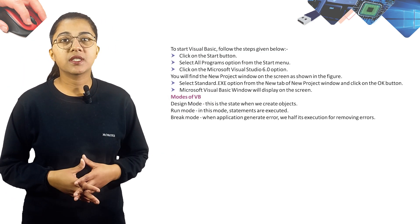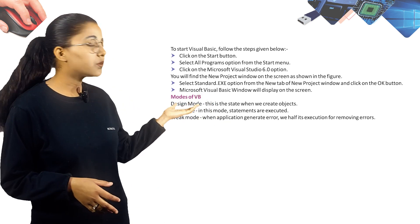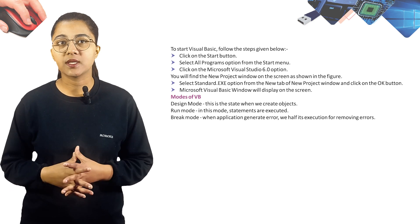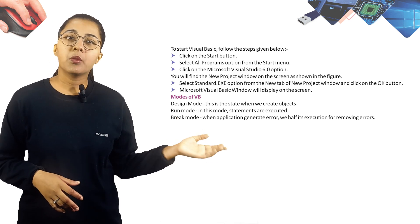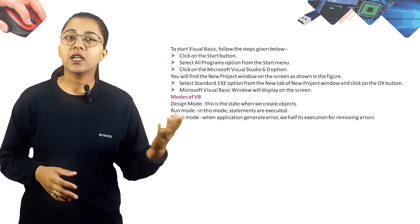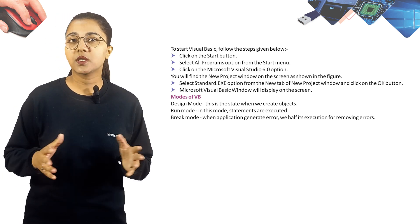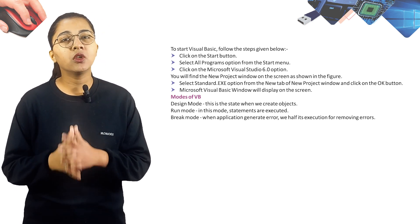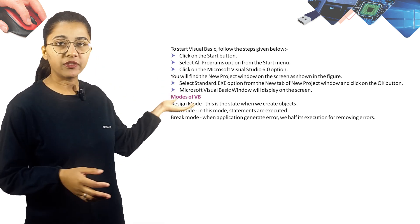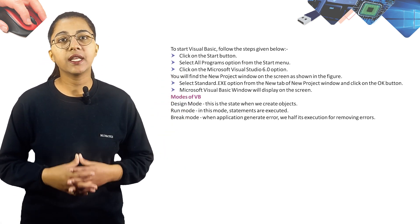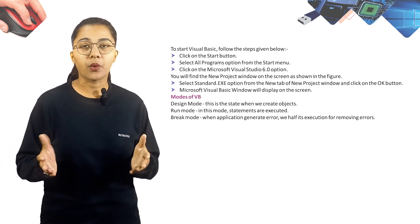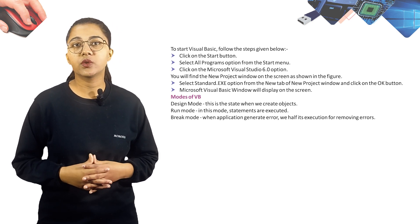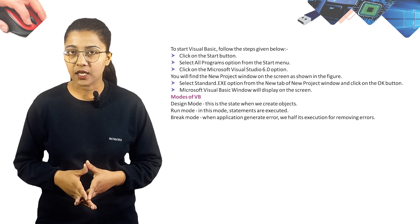To start Visual Basic, follow these steps: First, click on the Start button, then select All Programs from the Start menu, and click on the Microsoft Visual Basic Studio 6.0 option. You will find the New Project window on the screen. Next, select the Standard EXE option from the New tab of the New Project window and click OK. The Microsoft Visual Basic window will display on the screen.